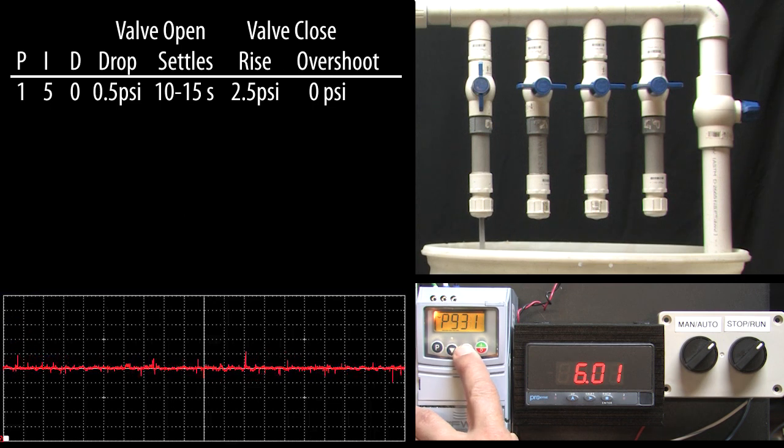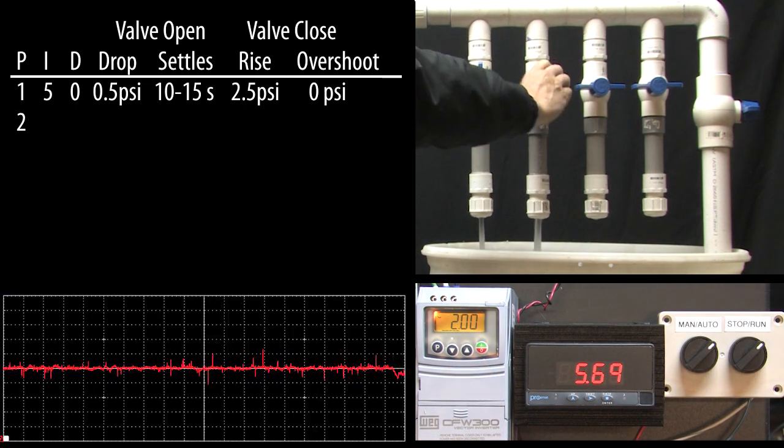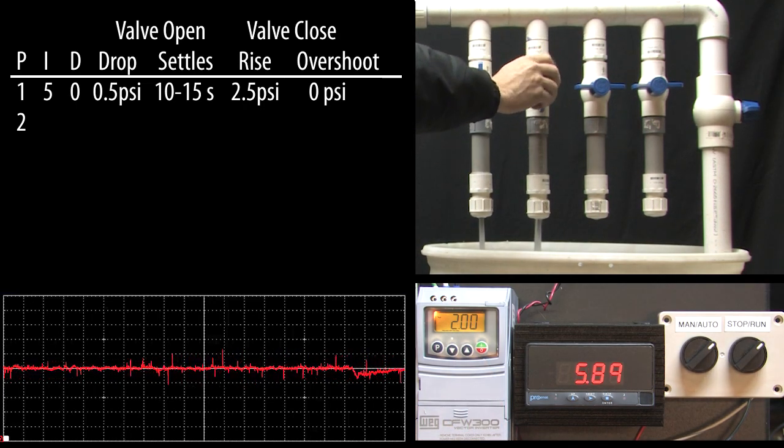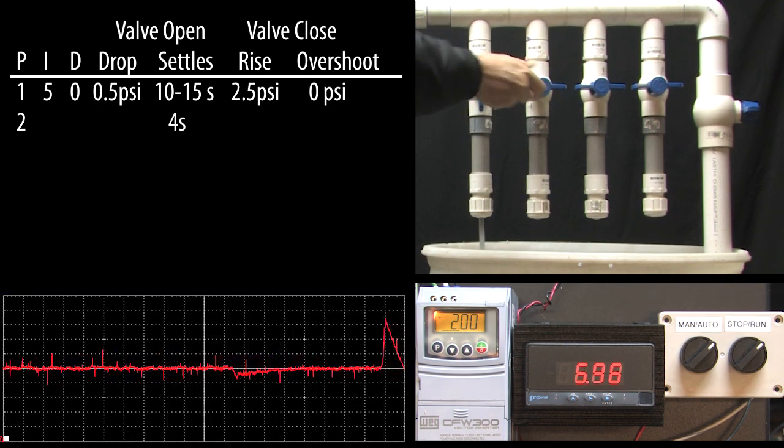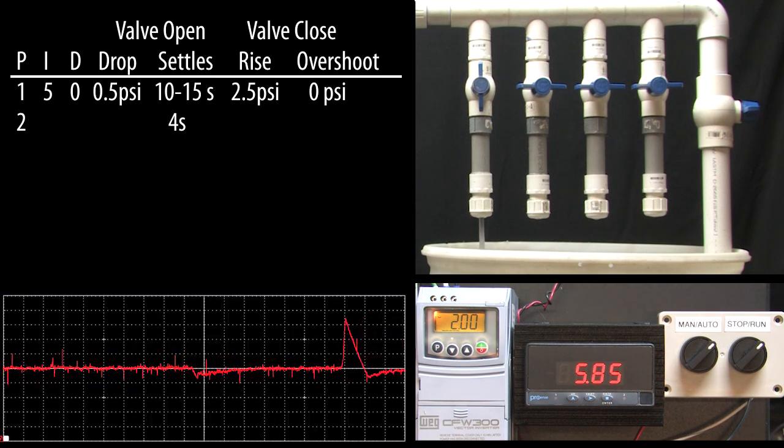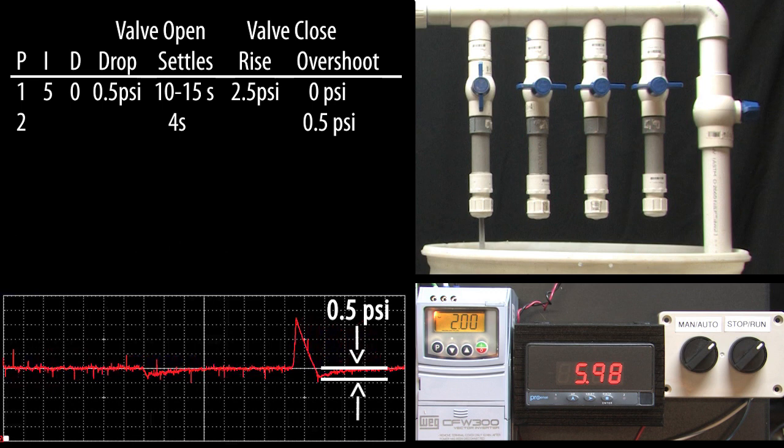The gain is in parameter 931 so let's double that to a 2. Now if I open that same valve, we have a much faster recovery time. Cool! But when I close the valve, the recovery drops past 6 psi by about half a psi so now it takes longer for the valve closing to recover.